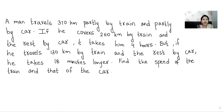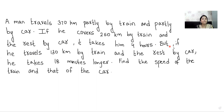The question is: a man travels 370 kilometers, partly by train and partly by car. If he covers 250 kilometers by train and the rest by car, it takes him four hours. But if he travels 130 kilometers by train and the rest by car, he takes 18 minutes longer. Find the speed of the train and that of the car.